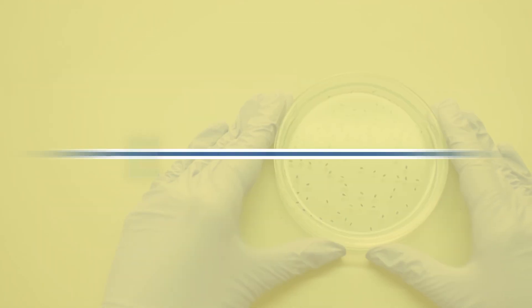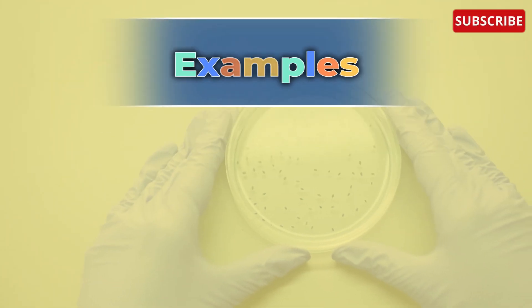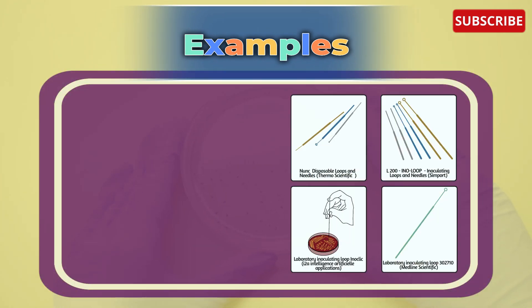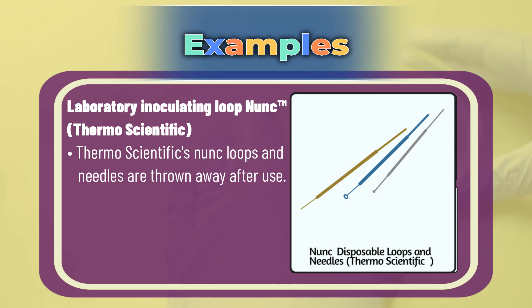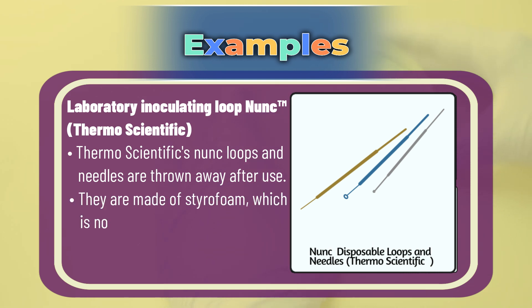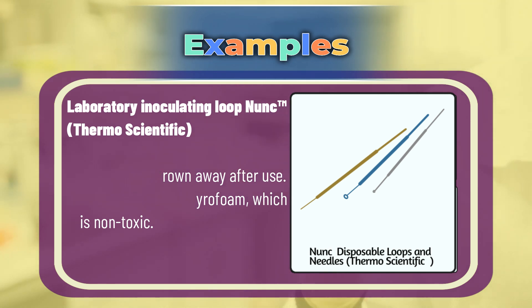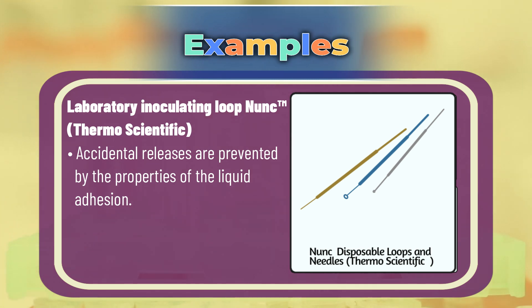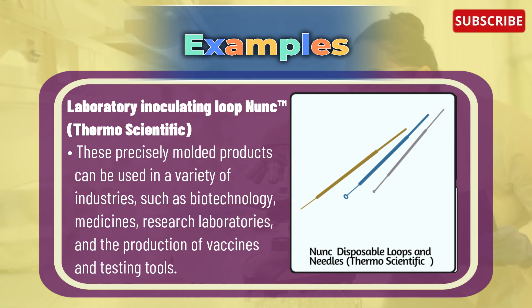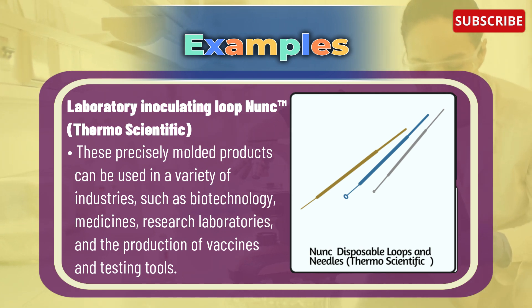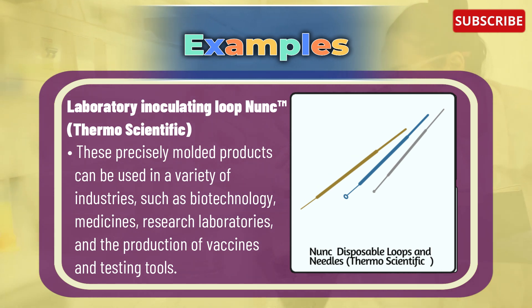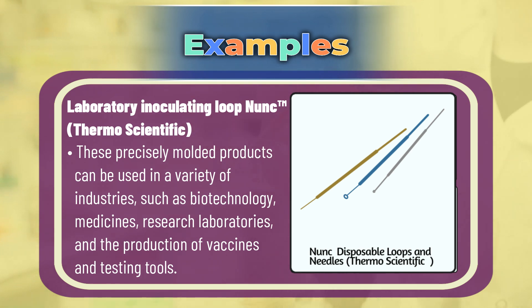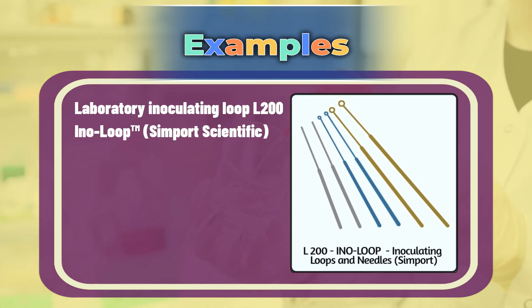Now let's head to the examples of inoculating loops and needles with the help of this diagram. The first example is the laboratory inoculating loop Nunc™ (Thermo Scientific). Thermo Scientific Nunc loops and needles are thrown away after use. They are made of non-toxic styrofoam; accidental releases are prevented by properties of the liquid addition. These precisely moderated products can be used in a variety of industries such as biotechnology, medicines, research laboratories, and the production of vaccines and testing tools.